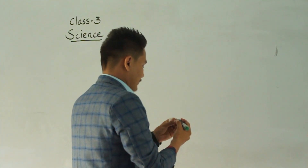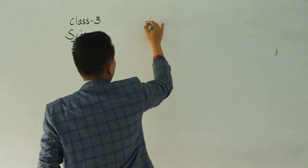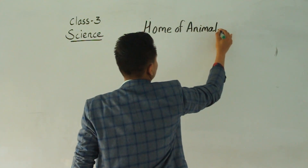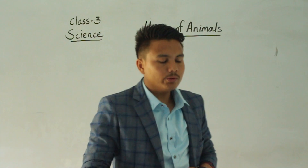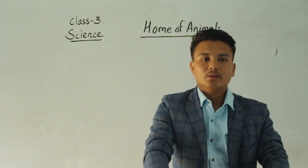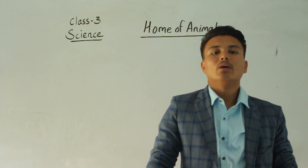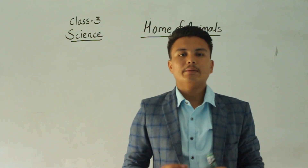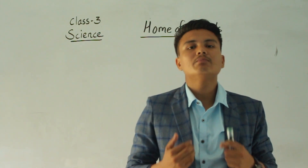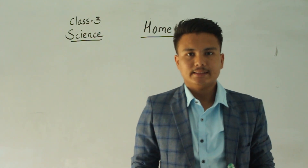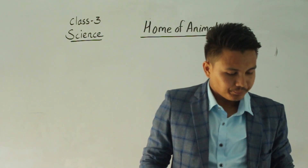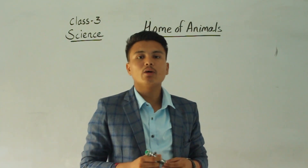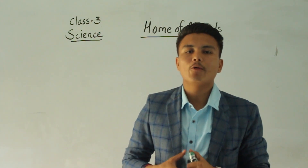So before that, we are going to learn about the homes of animals. We know that animals live everywhere on the earth. We find animals everywhere — they live in different types of habitats. All animals have different types of habitats. We humans live in our homes, and small insects also live in homes.